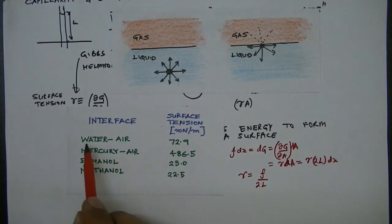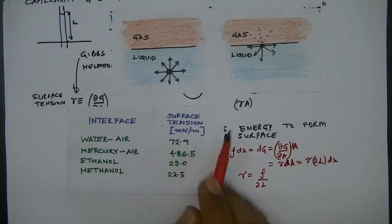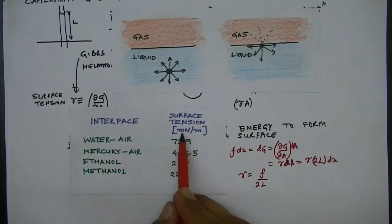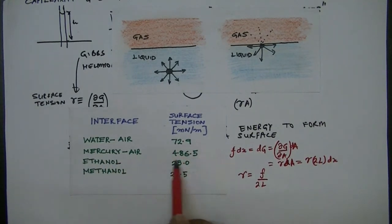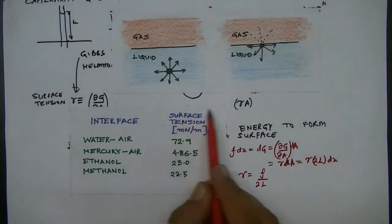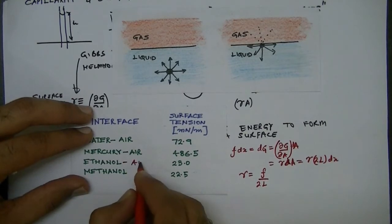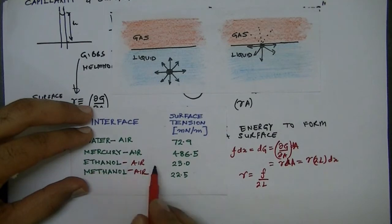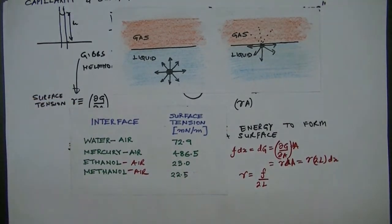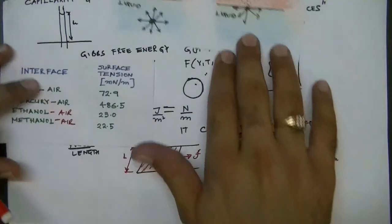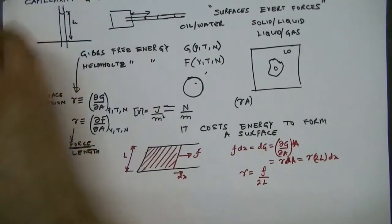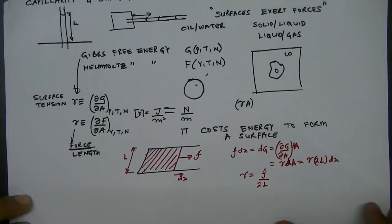Typical values of gamma are of the order of a few millinewtons per meter. For a water-air interface, the surface tension is 72.9 mN/m. For a mercury-air interface it is 486.5 mN/m. For ethanol or methanol in contact with air, the surface tension is approximately 20 mN/m.